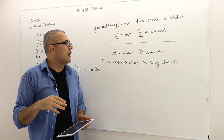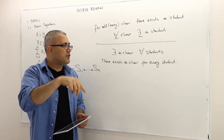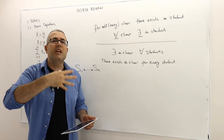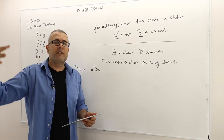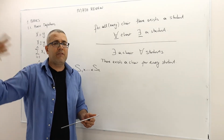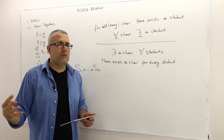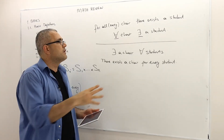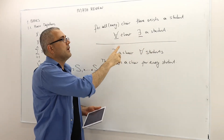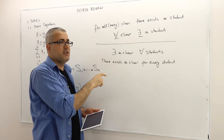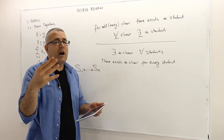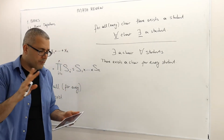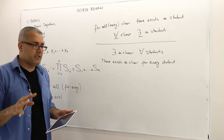The second sentence, on the other hand, means there exists a chair for every student. The students are waiting outside, but there are enough chairs in this classroom so that we will not leave anybody outside. No student will be left outside. So here the number of students is probably higher than the number of chairs, and in the second case, the number of chairs is probably higher than the number of students. So the location of these two terms is important.